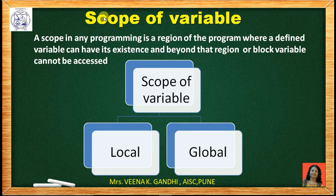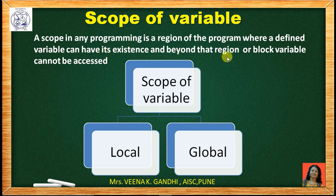The scope of a variable in any programming language is the region of the program where a defined variable can have its existence. Beyond that region or block, the variable cannot be accessed. The scope of variables is of two types: local scope or block scope, and global scope or file scope.